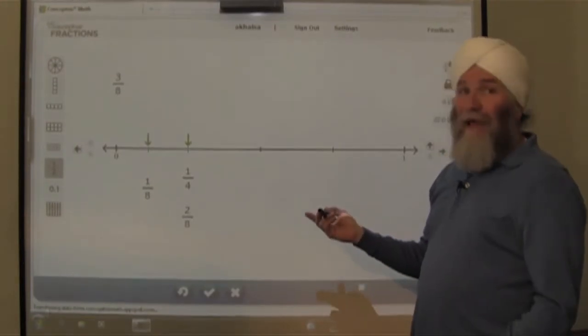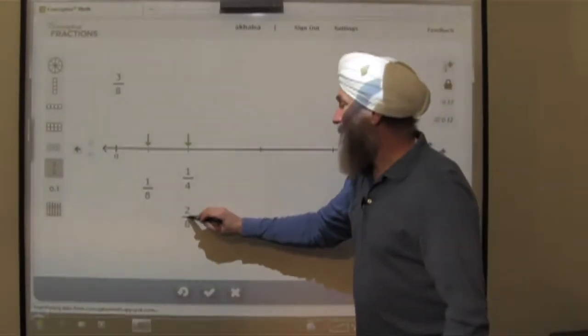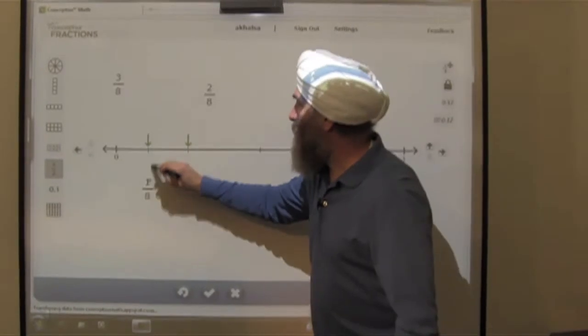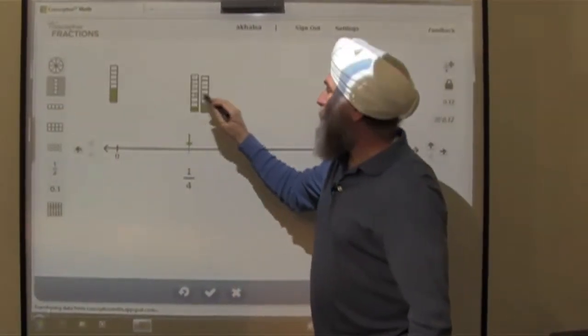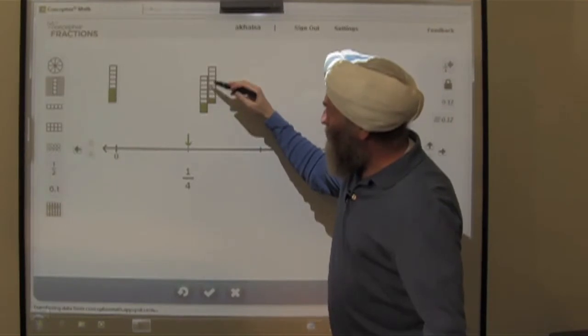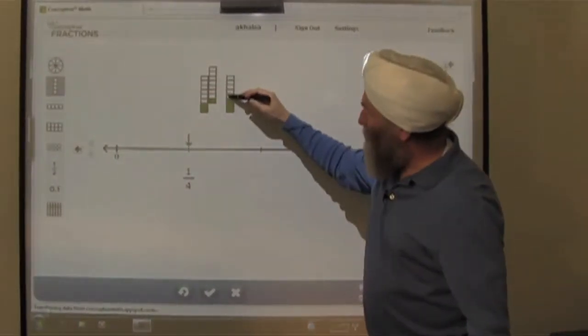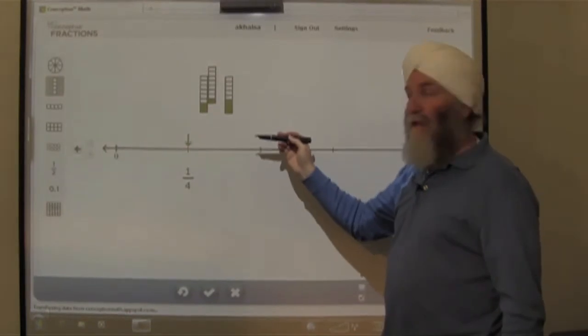3 eighths, well, that's going to be the same as 1 eighth plus 2 eighths. And let's prove that. Let's just move these up here for a moment and make sure that this all makes sense. So if you take the 1 eighth and you add it to the 2 eighths, check this out. It's going to have the same height as the 3 eighths.